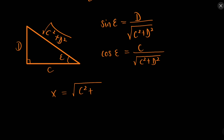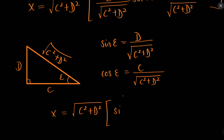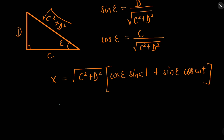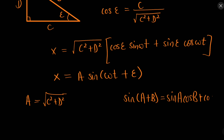Let x = √(C²+D²). Putting the values, we get x[cos ε sin(ωt) + sin ε cos(ωt)]. Using sin(A+B) = sin A cos B + cos A sin B, this can be written as x sin(ωt + ε). So the resultant is x = A sin(ωt + ε), where A = √(C²+D²) = √(A₁²+A₂²+2A₁A₂ cos δ). This formula was derived using the sin(A+B) identity.